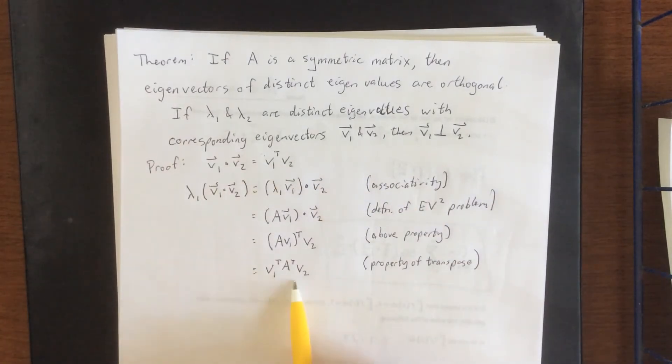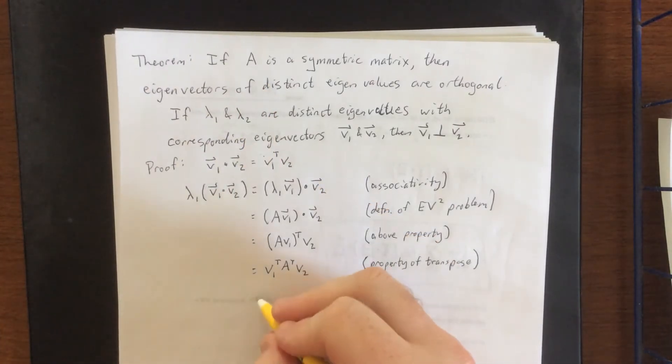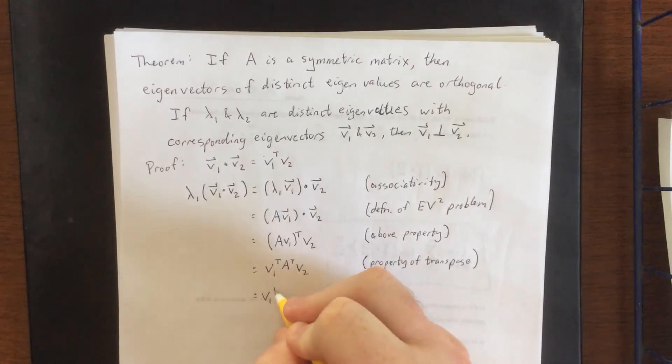Next what I'm going to do is apply the fact that we assumed in the first case that A is a symmetric matrix, which means that A transpose would be equal to itself, or rather matrix A.